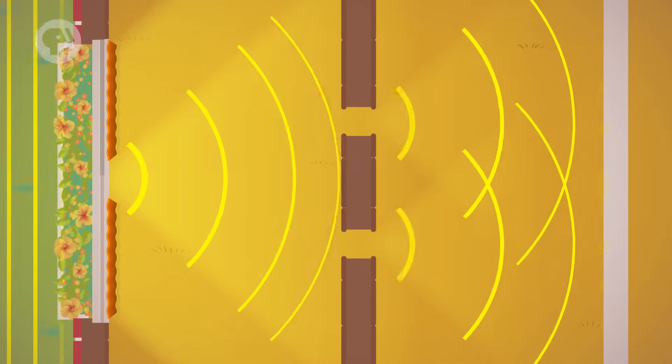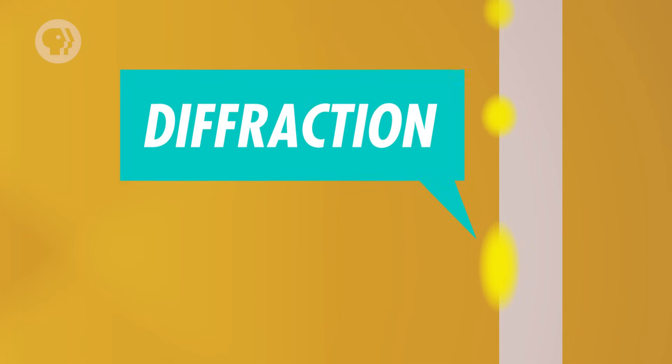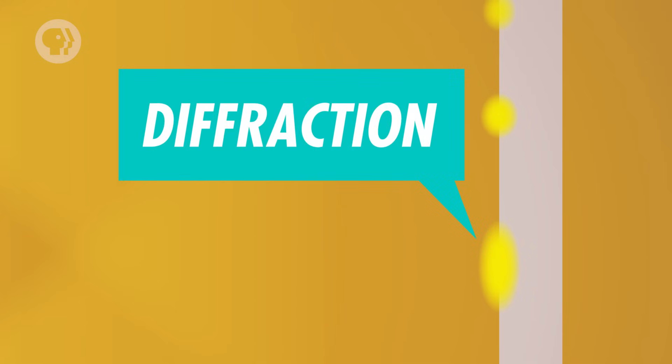If light were just a stream of particles, you'd expect to see two bright lines on the screen, behind the two slits. But that's not what Young saw! His screen had many lines on it. There was a bright line in the middle, then more bright lines above and below it. This pattern is called a diffraction pattern, and it comes from the diffraction and interference of light waves.